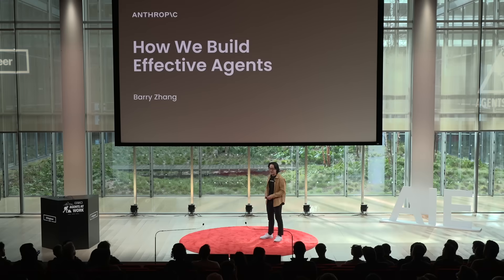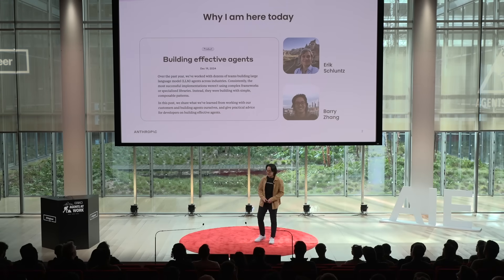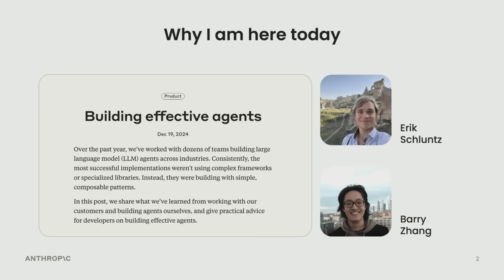It's incredible to be on the same stage as so many people I've learned so much from. Let's get into it. My name is Barry and today we're going to be talking about how we build effective agents. About two months ago, Eric and I wrote a blog post called Building Effective Agents. In there, we shared some opinionated take on what an agent is and isn't, and we give some practical learnings that we have gained along the way. Today, I'd like to go deeper on three core ideas from the blog post and provide you with some personal musings at the end.